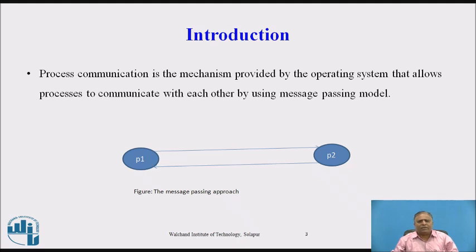This communication could involve a process letting another process know that some event has occurred, or transferring of data from one process to another. One of the models of process communication is the message passing model. Message passing model allows multiple processes to read and write data to the message queue. Messages are stored on the queue until their recipient retrieves them. Message queues are quite useful for inter-process communication and are used by most operating systems.